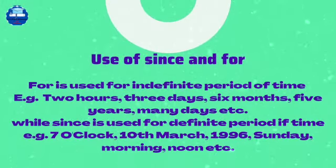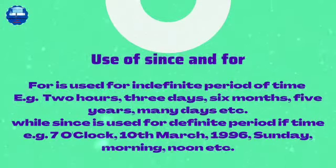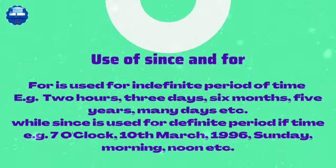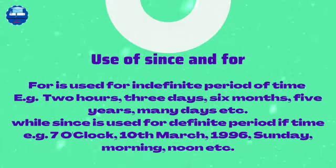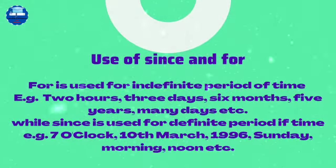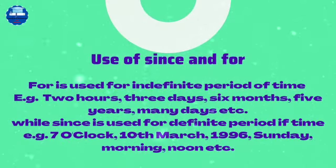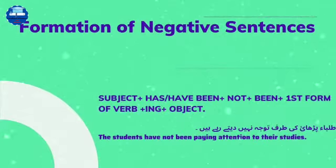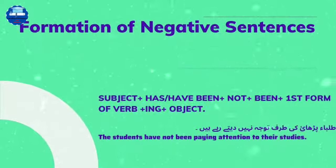Let's learn how we use them. 'For' is used for an indefinite period of time — for example: two hours, three days, six months, five years, many days, etc. While 'since' is used for a definite point in time — for example: seven o'clock, 10th March, 1996, Sunday, morning, noon, etc.